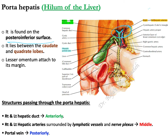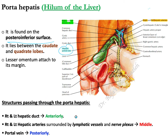Just posterior to the hepatic ducts are the right and left hepatic arteries, which are branches of the hepatic artery proper. Most posteriorly there is the hepatic portal vein, shown in blue. So the arrangement of these structures is: most anteriorly the right and left hepatic ducts, in the middle the right and left hepatic arteries, and most posteriorly the hepatic portal vein.